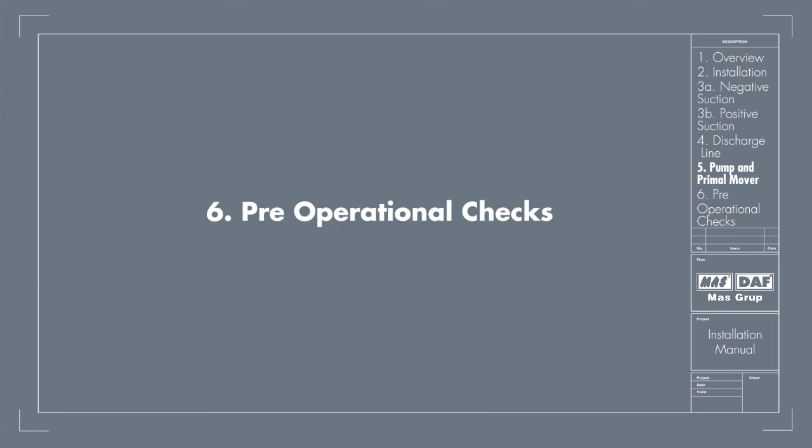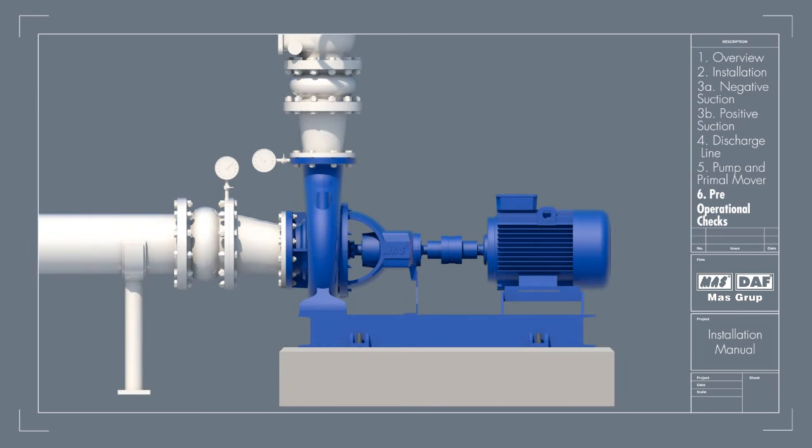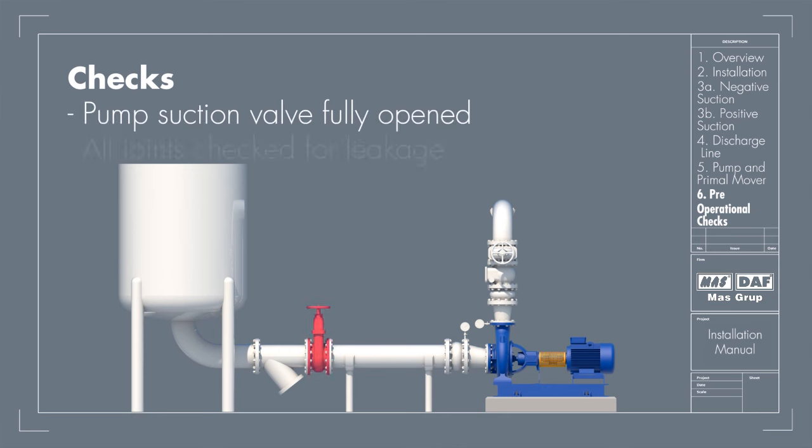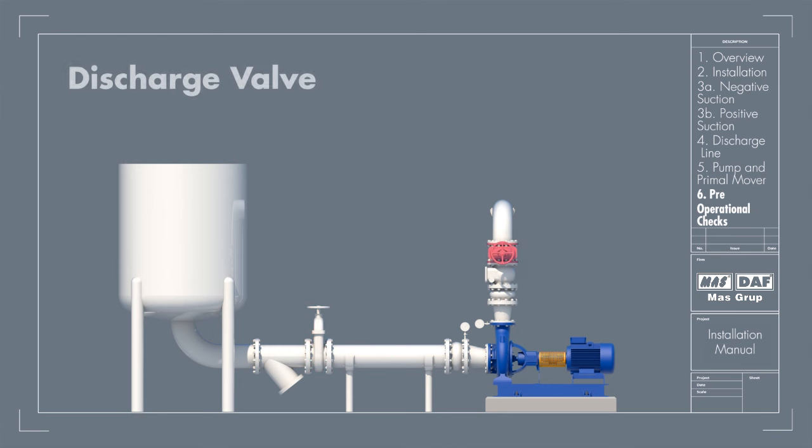Pre-operational checks: After checking alignment of coupling, assemble the coupling guard and tighten the bolts. Ensure that the pump suction valve is fully open and all joints are checked for any leakage. The discharge valve should be kept closed to prevent overloading the prime mover.